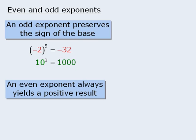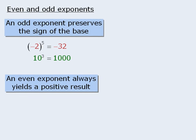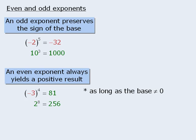If the exponent is an even number, the expression will always evaluate to be positive regardless of the sign of the base. Please note that there is one exception: if the base is zero, the expression evaluates to zero. Otherwise, if the base is a non-zero number, the result is always positive. In these examples, the exponents are both even, and regardless of whether the base is negative or positive, the result is always positive.